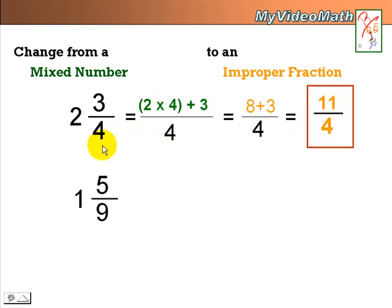Let's look at another example. 1 and 5 9th. Again, it takes the whole number, multiply by the denominator, and then add it with the numerator. 1 times 9 plus 5.